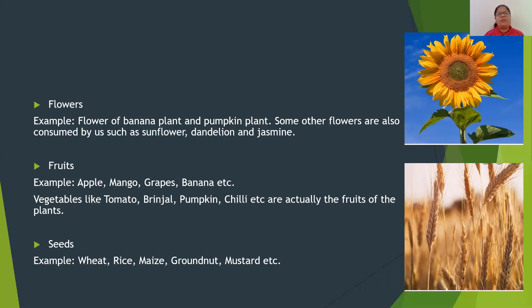The next part of the plant which can be consumed by us is fruit. Plants store their food in fruits. Examples are apple, mango, banana, grapes, etc. The vegetables that we eat like tomato, brinjal, pumpkin, and chili are actually nothing but the fruits of the plant.